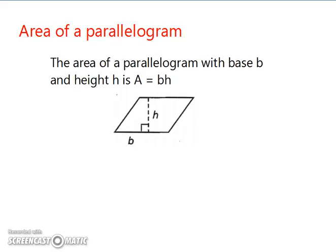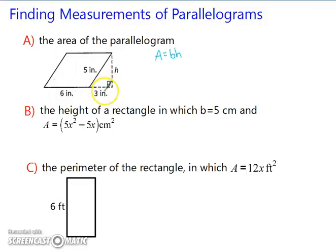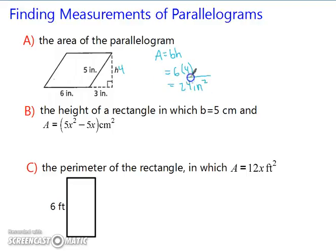Let's try a few examples. For the area of the parallelogram, we know that area equals base times height. We don't have the height here, but we can notice it's a right triangle and use the Pythagorean theorem — or shortcut it by recognizing that the hypotenuse is 5 and one leg is 3, making it a 3-4-5 triangle, one of the Pythagorean triples. So the area equals 6 times 4, which is 24 inches squared.